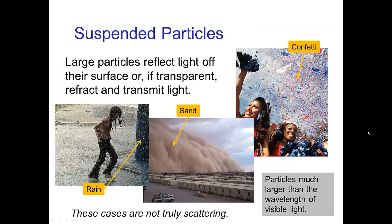Larger size particles don't actually have true scattering — they actually reflect the light off the surface, or if they're transparent like rain, then we have some refraction and transmission and possibly also some reflection. So when we see rain, sand in a sandstorm, or other suspended particles, what we're really seeing is reflection from the surfaces of those particles. When you see a rainbow, what you're actually seeing is reflected light from the water droplets.